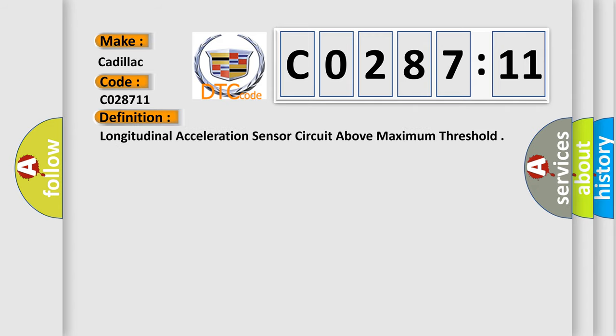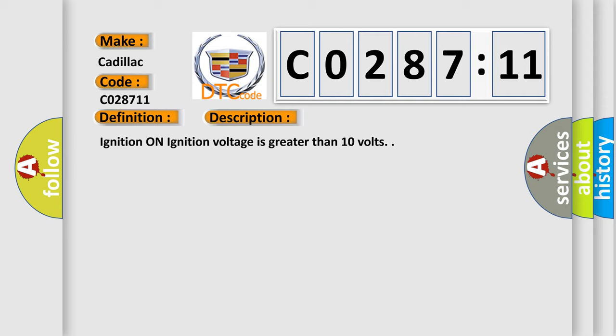The basic definition is: Longitudinal acceleration sensor circuit above maximum threshold. And now this is a short description of this DTC code.